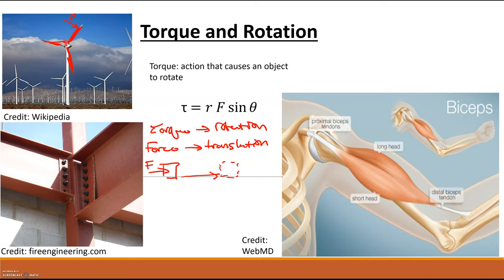That rotation is what's turning a generator, and that's how we generate power. So we're using the wind to apply a force, which causes a torque on the blade, which then produces energy. You can miniaturize this into something you probably have in your house — a common blade fan — where it's the opposite: a motor applies a torque on the blade shaft, causing it to rotate.